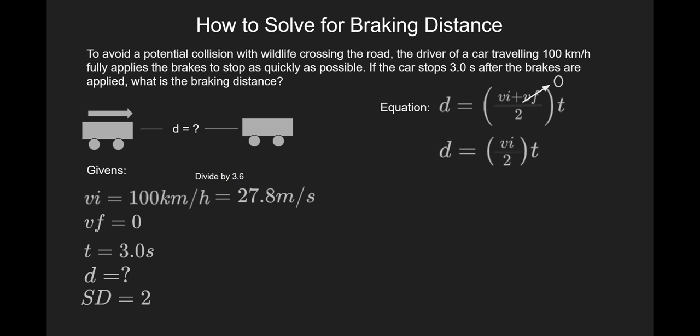If we rewrite it, it's just distance equals initial velocity divided by 2 multiplied by time. Now we can substitute in our givens. We substitute in all the numbers and do the calculation, we get an answer of 41.7.